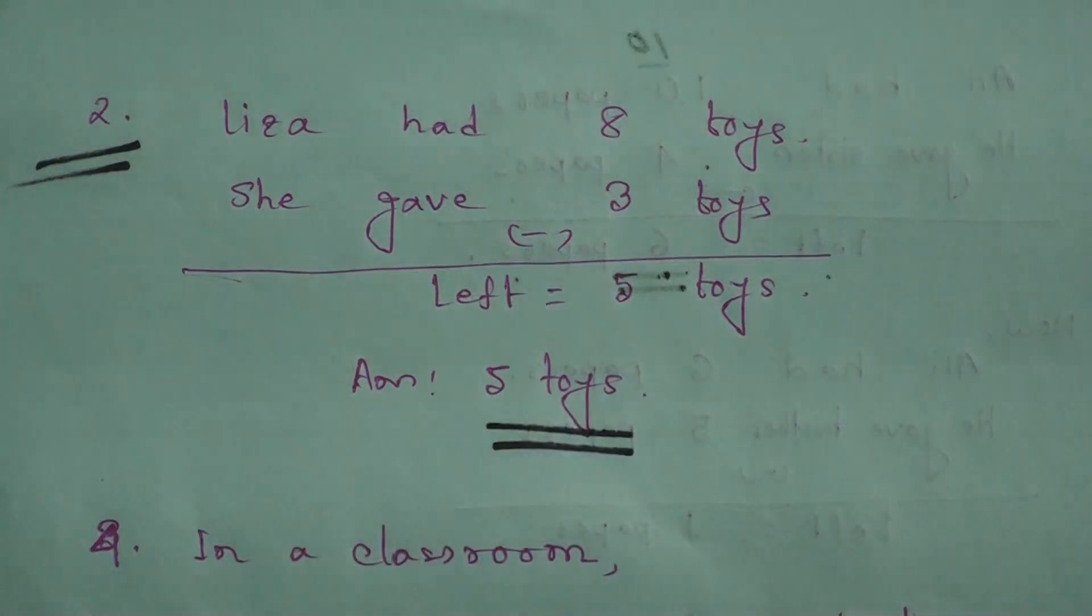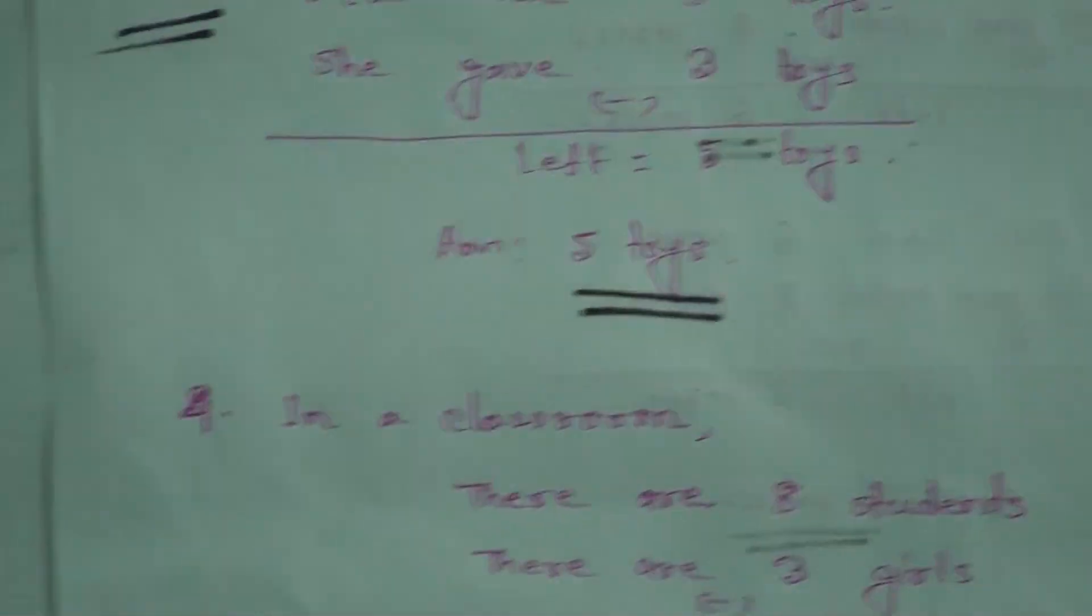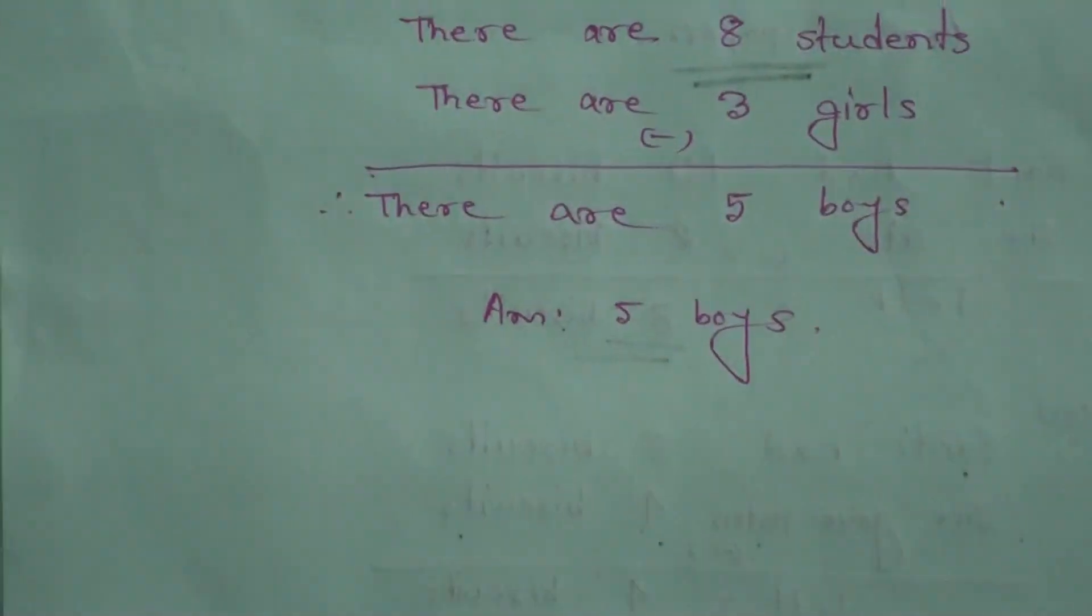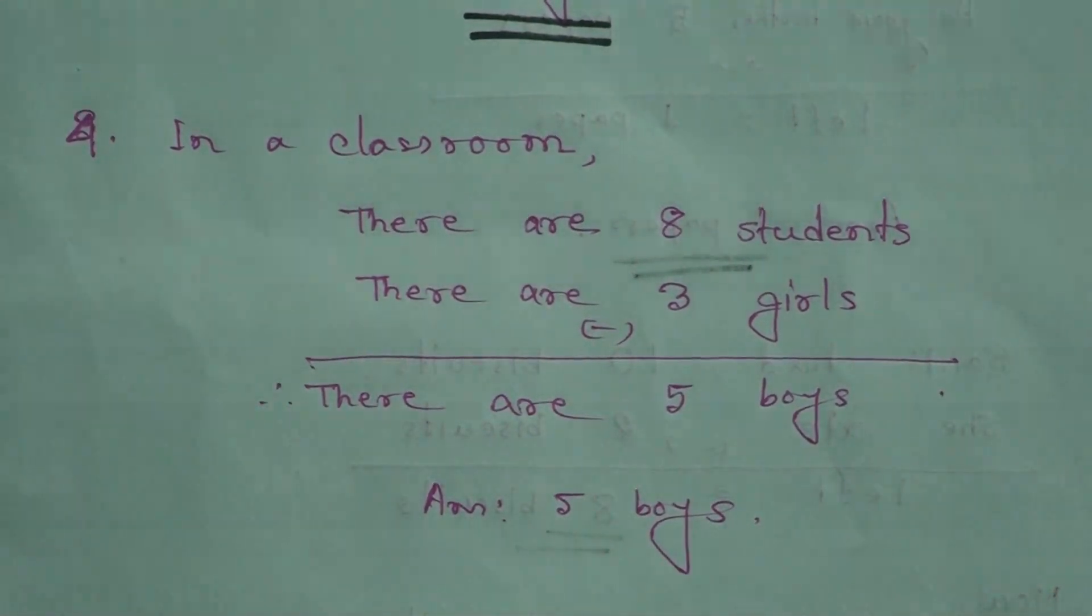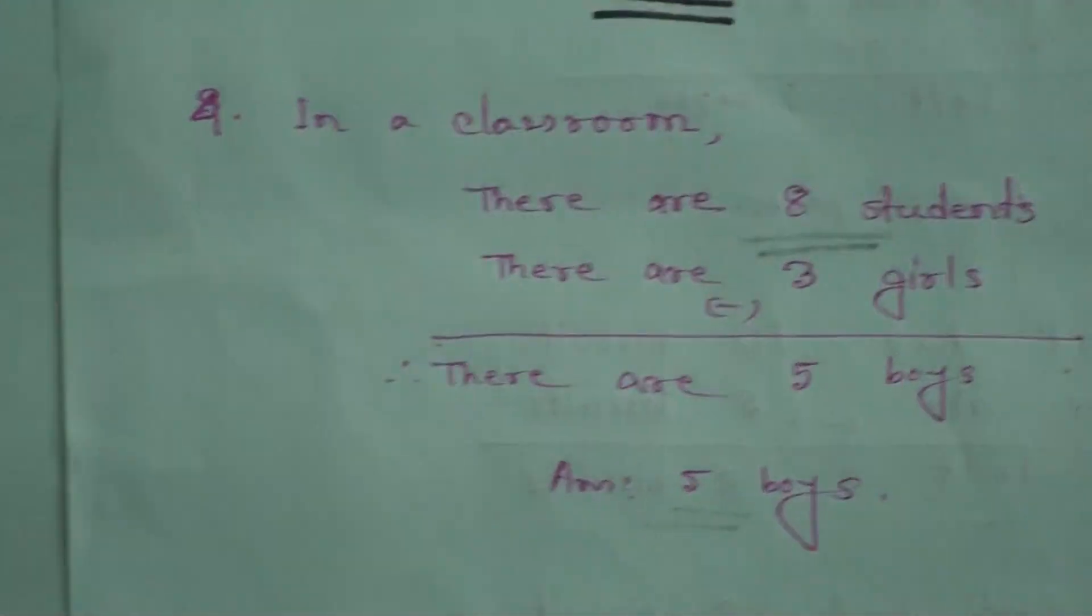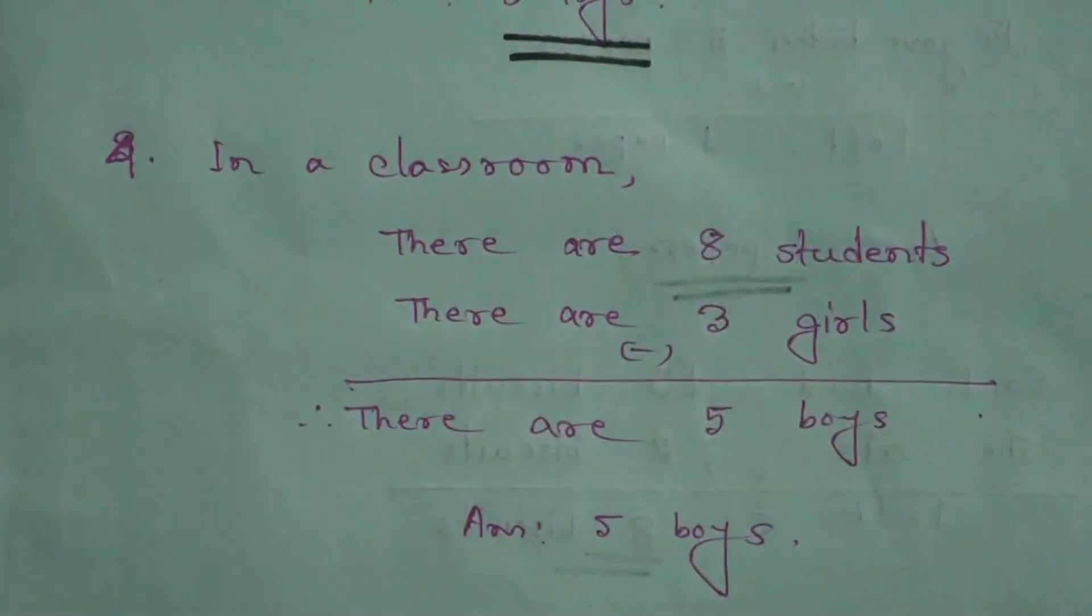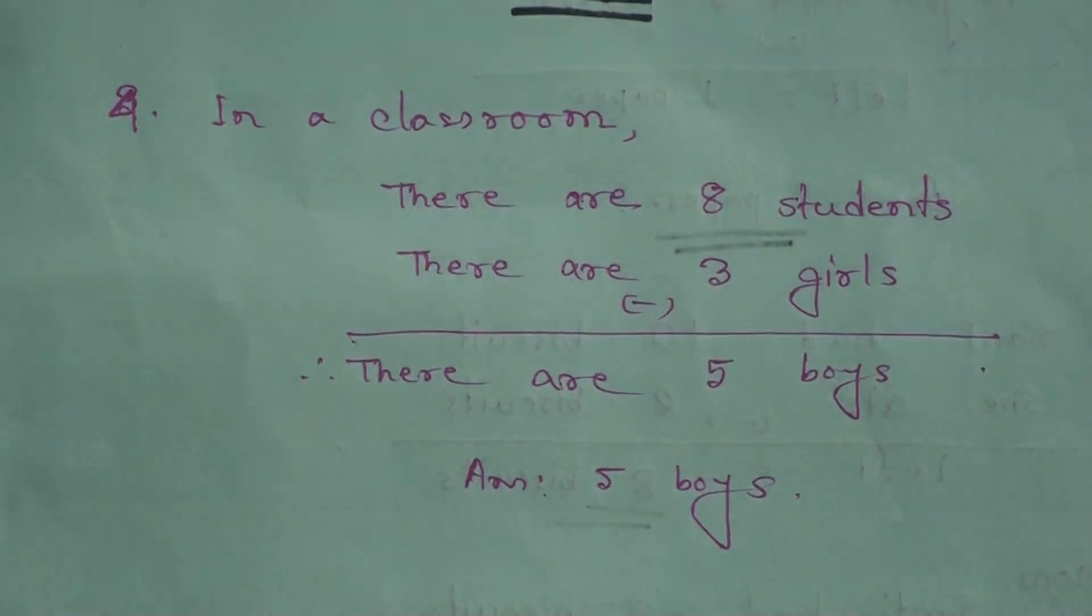Now go to question four. There are eight students sitting in a classroom. Three of them are girls. How many boys are in the classroom? So, solution of question four: In a classroom there are eight students.